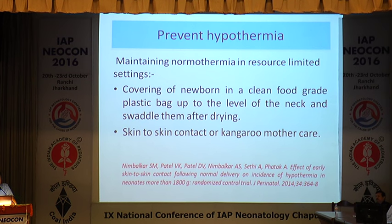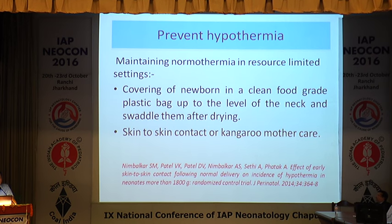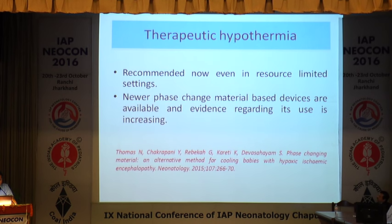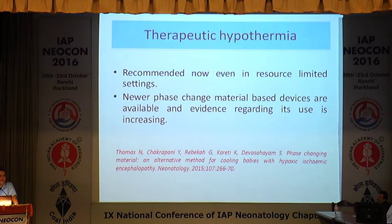In resource-limited settings, covering the newborn in a clean, food-grade plastic bag up to the level of the neck, and swathing them after drying, is important. Providing skin-to-skin contact through kangaroo mother care goes a long way in preventing hypothermia and hypothermia-related morbidity. Therapeutic hypothermia is now being recommended even in resource-limited settings. A new phase-change material-based device is available, and there is evidence regarding its use and efficacy even in Indian studies. The earlier it is begun, the better — so it can be utilized in the golden hour as well.